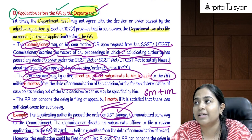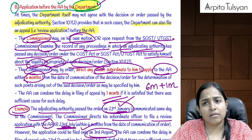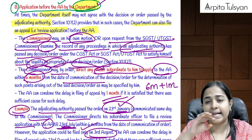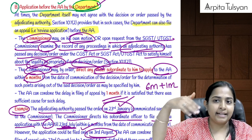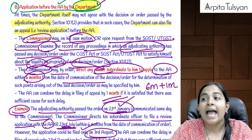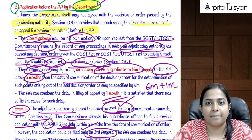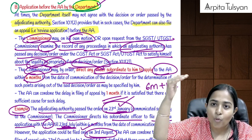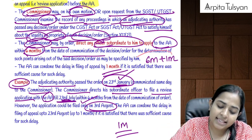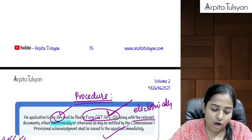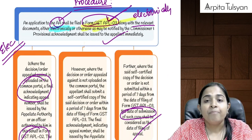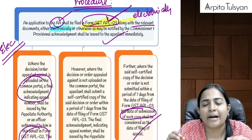When the department files an appeal — meaning when it disagrees with the adjudicating authority's decision — commissioner-level persons check the order's legality. If the decision is against the department, the commissioner directs lower authorities to file an appeal before the appellate authority. The department can file within six months from the date of communication of the order, with a further one-month condonation if there is sufficient cause. The appeal is filed in form GST APL-03.